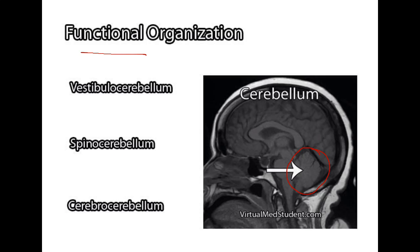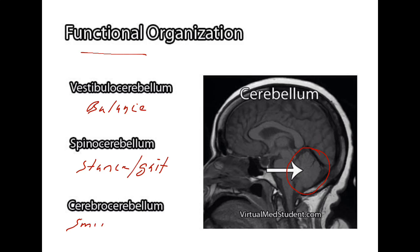The cerebellum can functionally be organized into three different components. The first is the vestibulocerebellum, and that's involved with the management of balance. The second is the spinocerebellum, which is important in managing stance and your ability to walk, or your gait. And then thirdly, the cerebrocerebellum is involved in the management of smooth and precise control of movements.